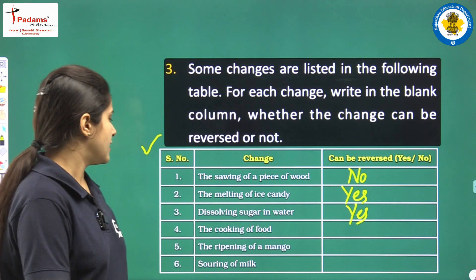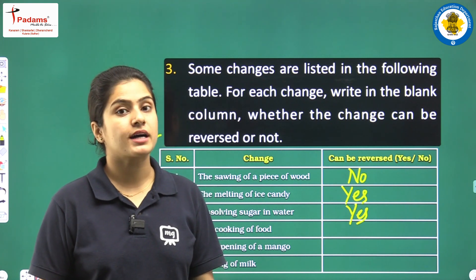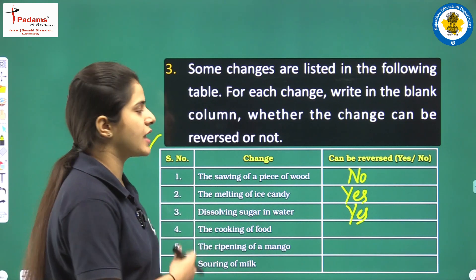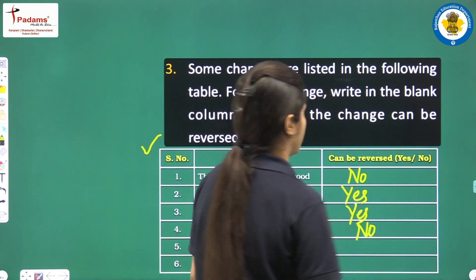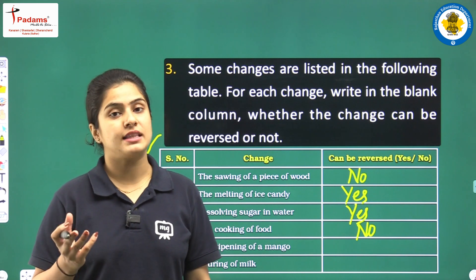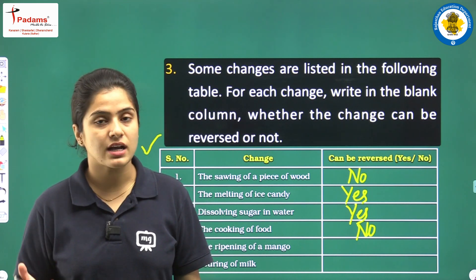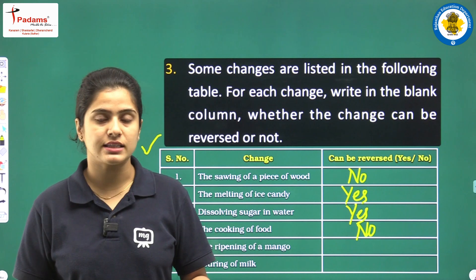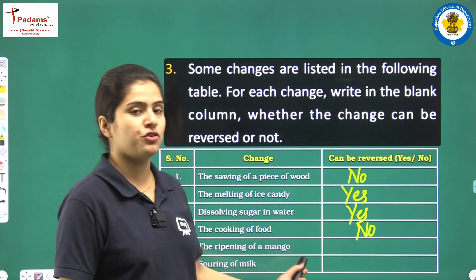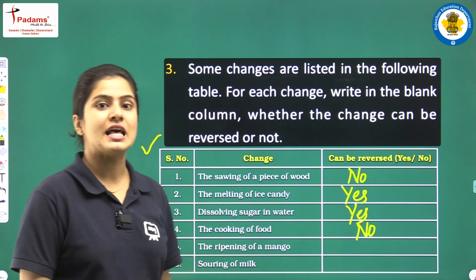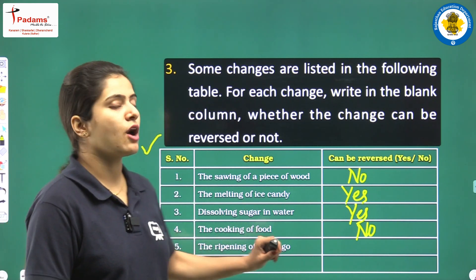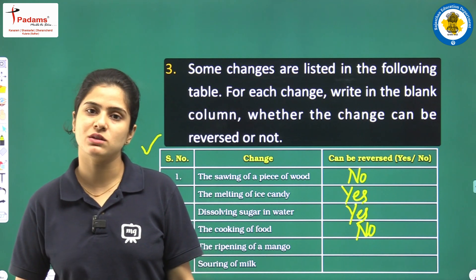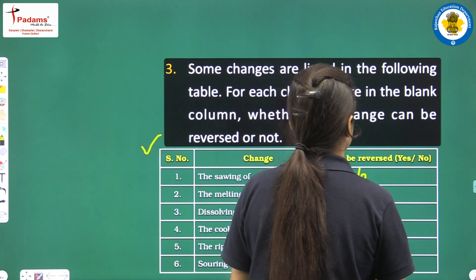Next change: the cooking of food. Agar aapne khana paka liya hai, toh paka hua khana pehle ke raw materials pe aap nahi la sakte. So the answer is no — this change can't be reversed. Cooking of food is an irreversible change. Next: the ripening of a mango. If a fruit has ripened, it means that it can't be reversed back. This is also an irreversible change, so the answer is no.